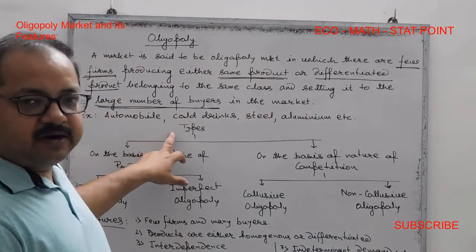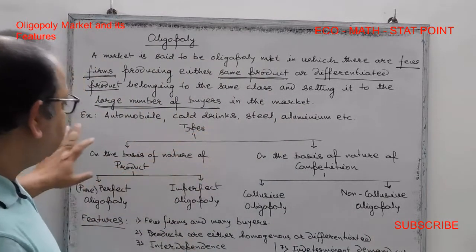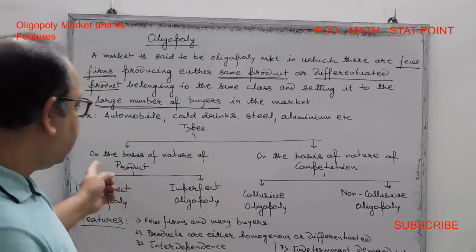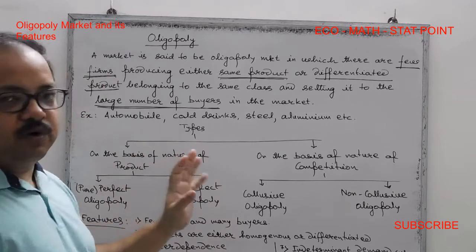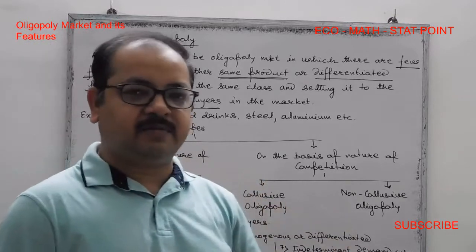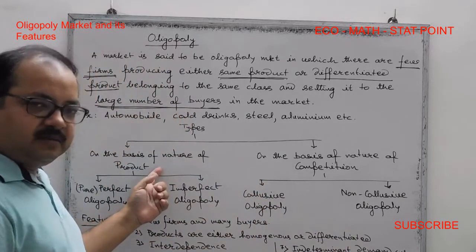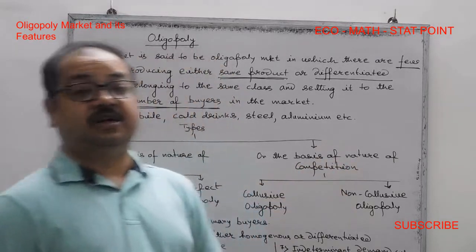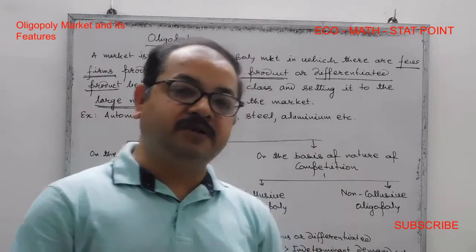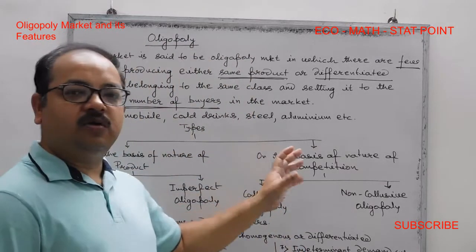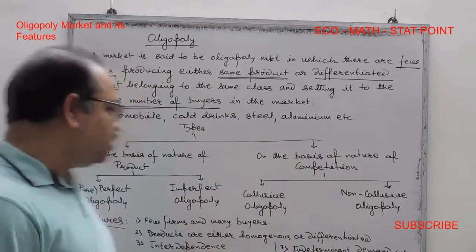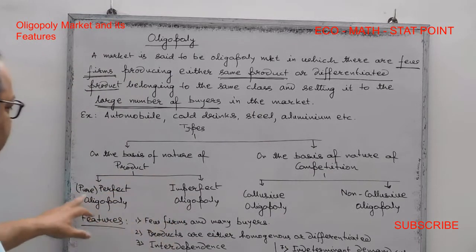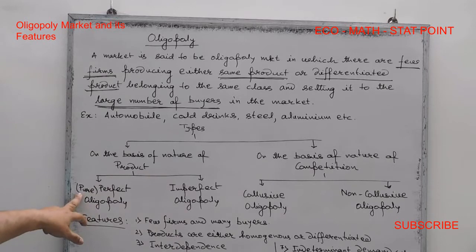We can classify the oligopoly market into types. The first basis of classification is the nature of products, giving us pure oligopoly and imperfect oligopoly. The second basis is the nature of competition.